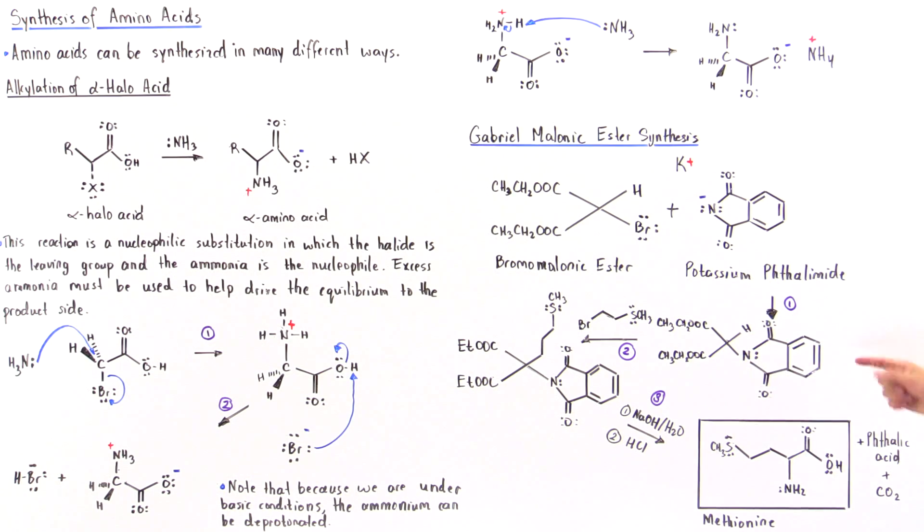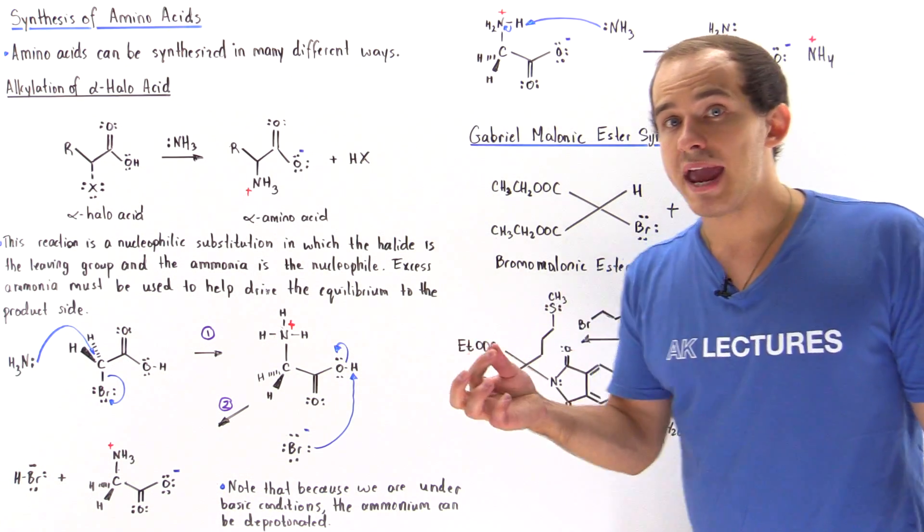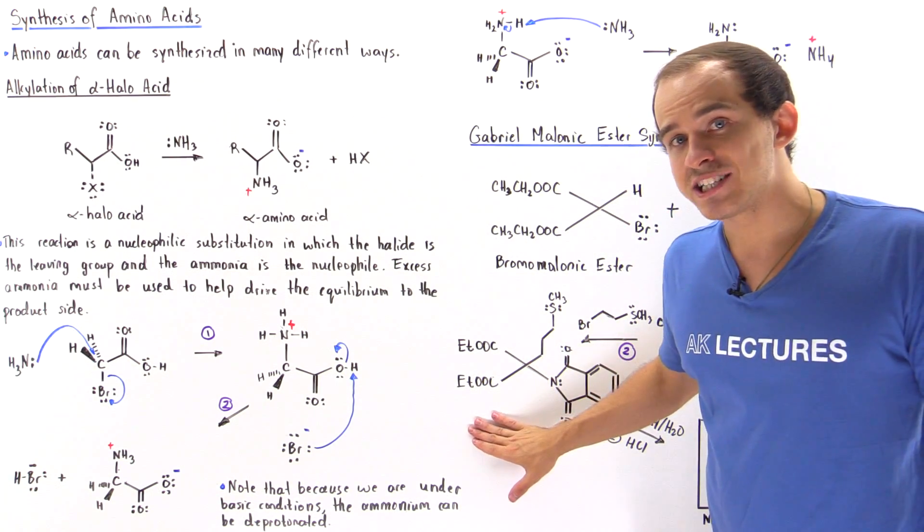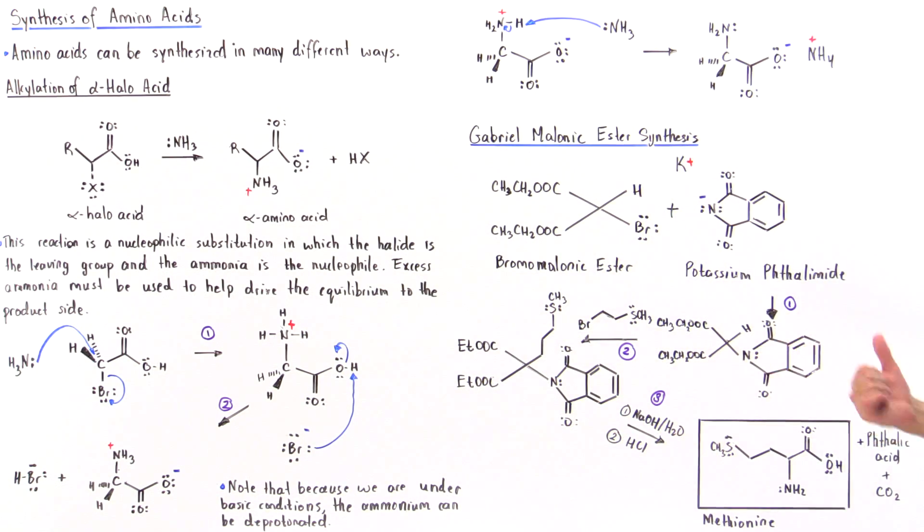Now, this intermediate will then react with the base. Let's suppose this base to produce this intermediate and in the final several steps, if we mix it in step one with our sodium hydroxide in the presence of water and then in step two with our acid, let's say HCl, we produce the final product.